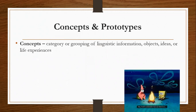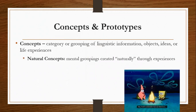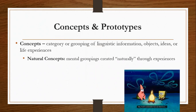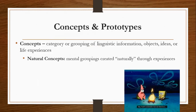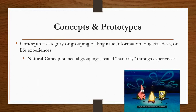Concepts can be broken into two categories. We have natural concepts, the mental groupings created naturally through experiences. Fire, for example, is a great natural concept — one that we understand through direct observation and experience. So we know fire will go out when you douse it with water because we've naturally experienced it in our life.